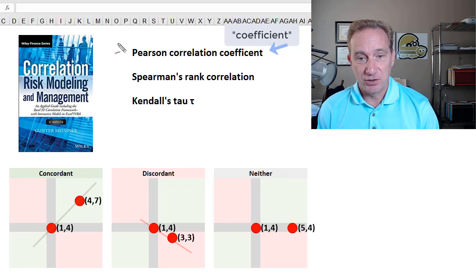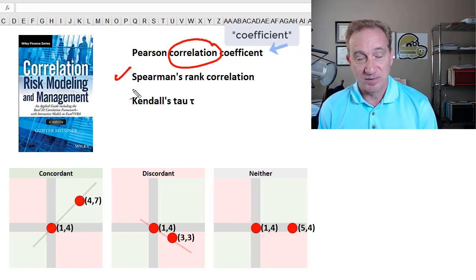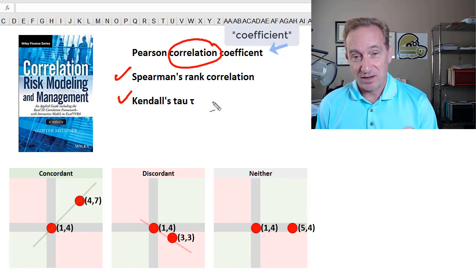Hi, in this video, I'll briefly review the Pearson correlation coefficient. Of course, that's the most popular measure of correlation, but mostly just so we have a baseline to compare to the two measures of rank correlation. Specifically, we'll look at the Spearman rank correlation and the Kendall's tau rank correlation.